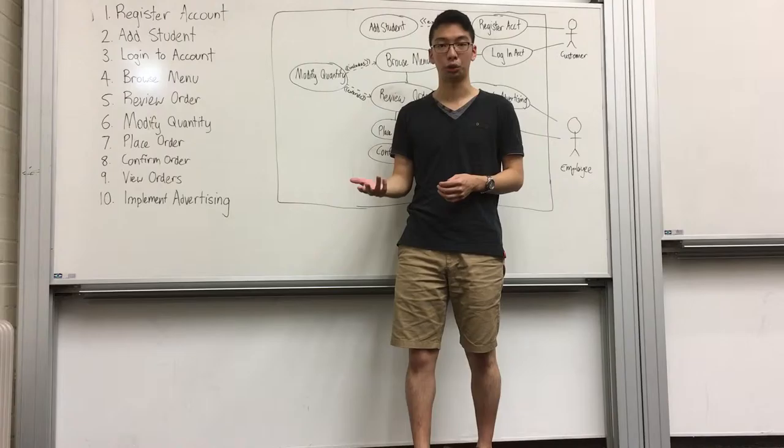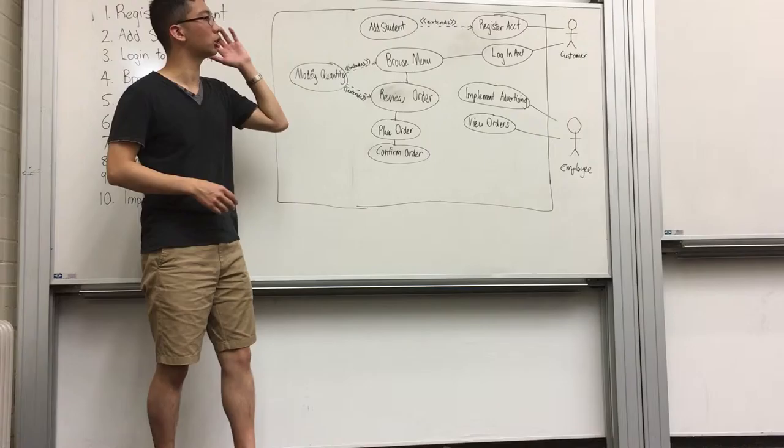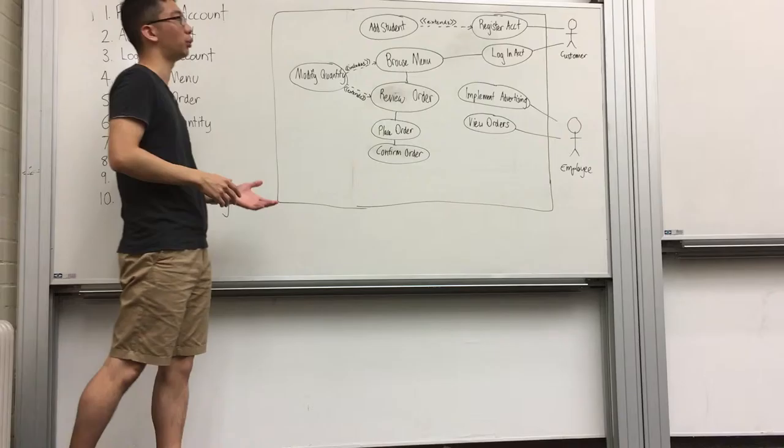This allows parents or students to make informed decisions about whether or not to order a particular food item. So looking here, we have the UML diagram, which essentially summarizes the 10 functional items as you can see.